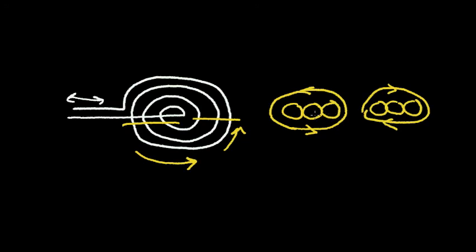So by changing the current rapidly back and forth, I can rapidly change this magnetic field back and forth. It will change directions.